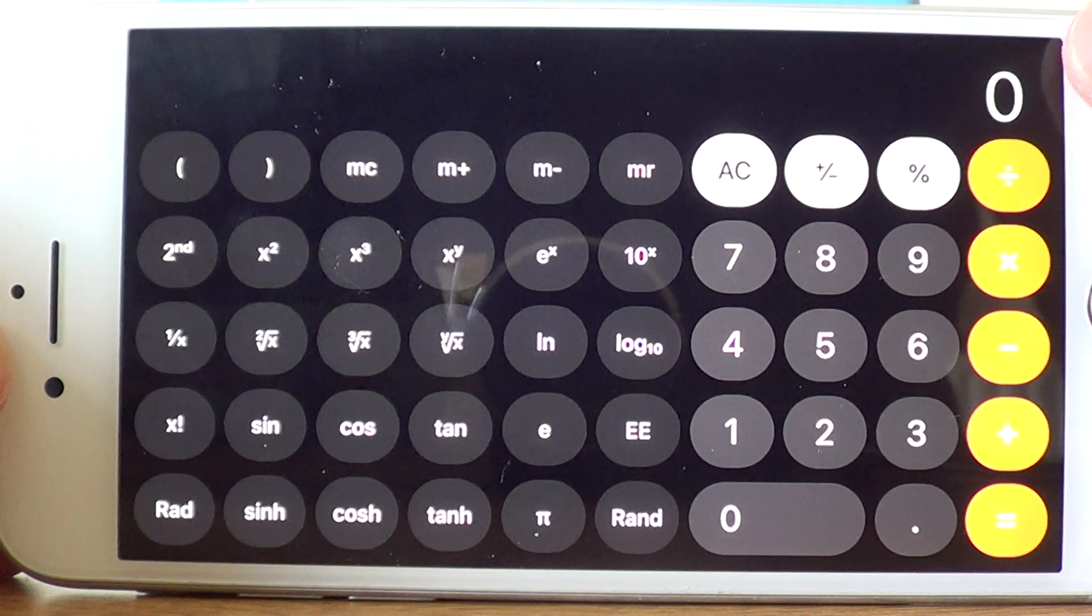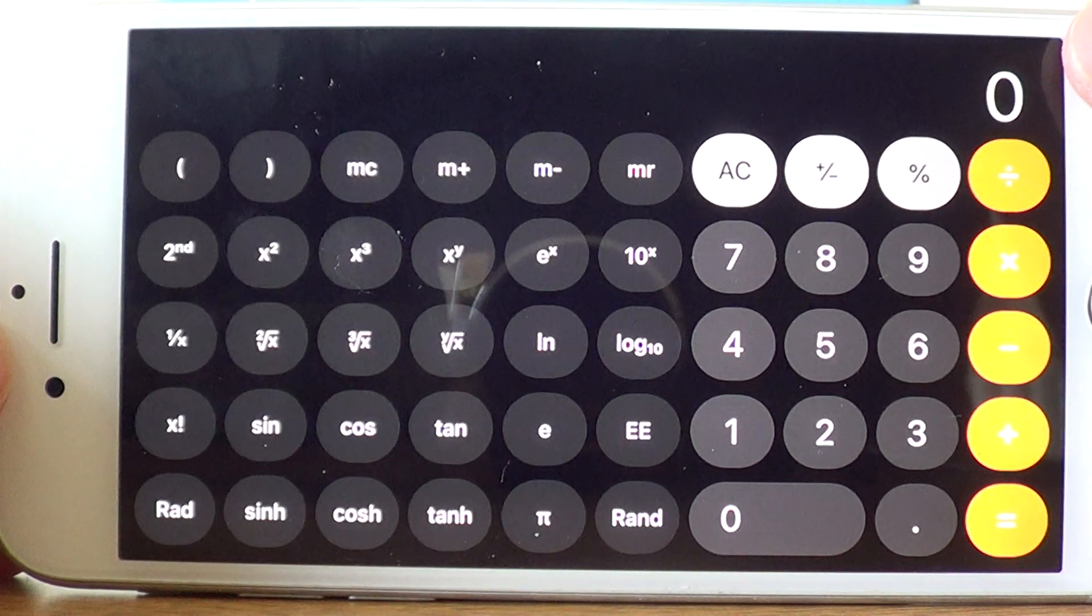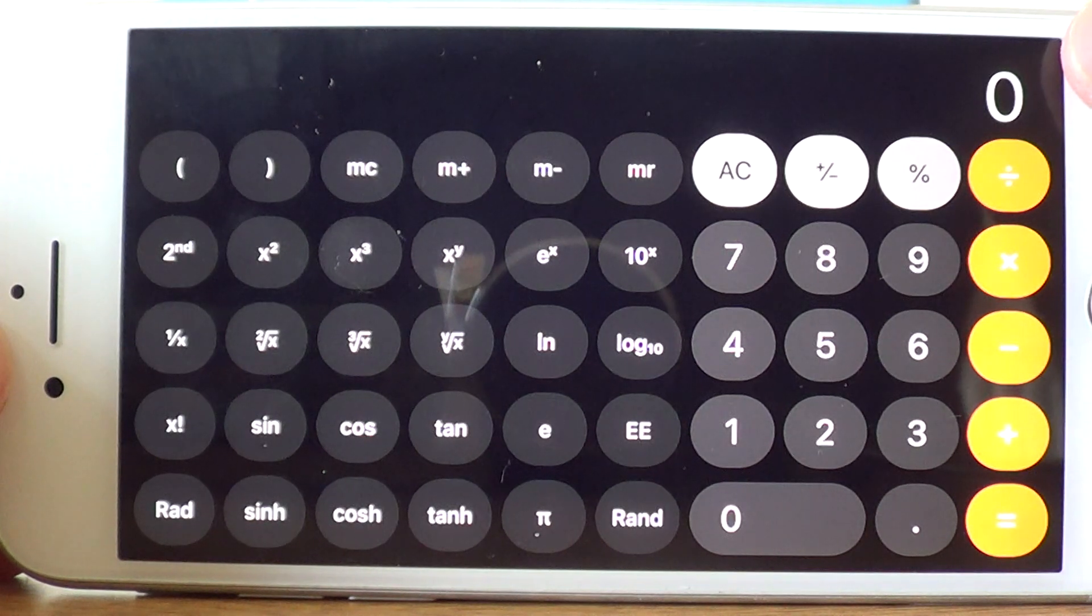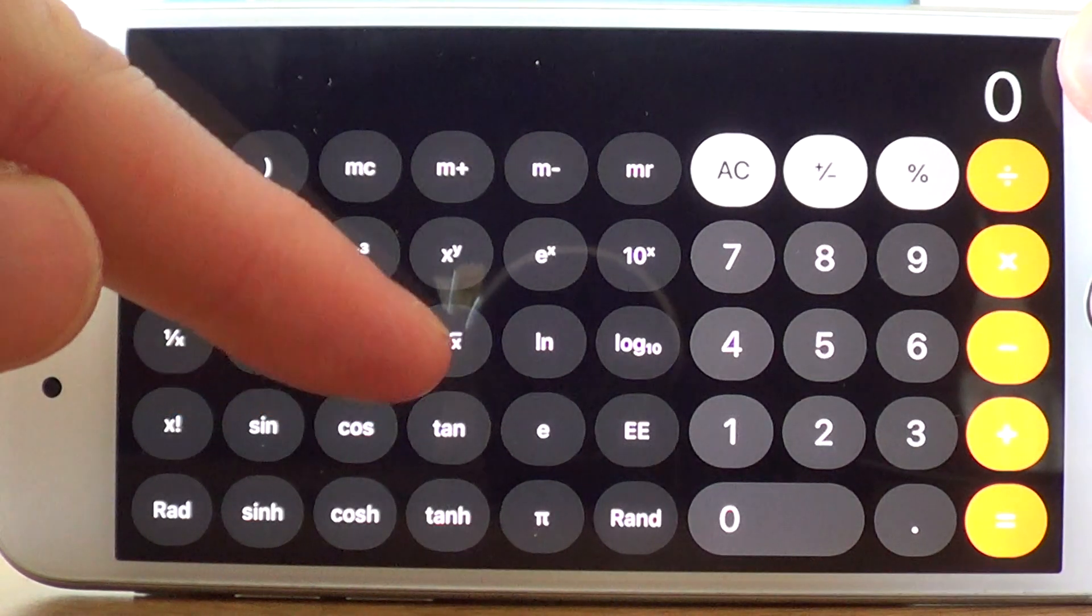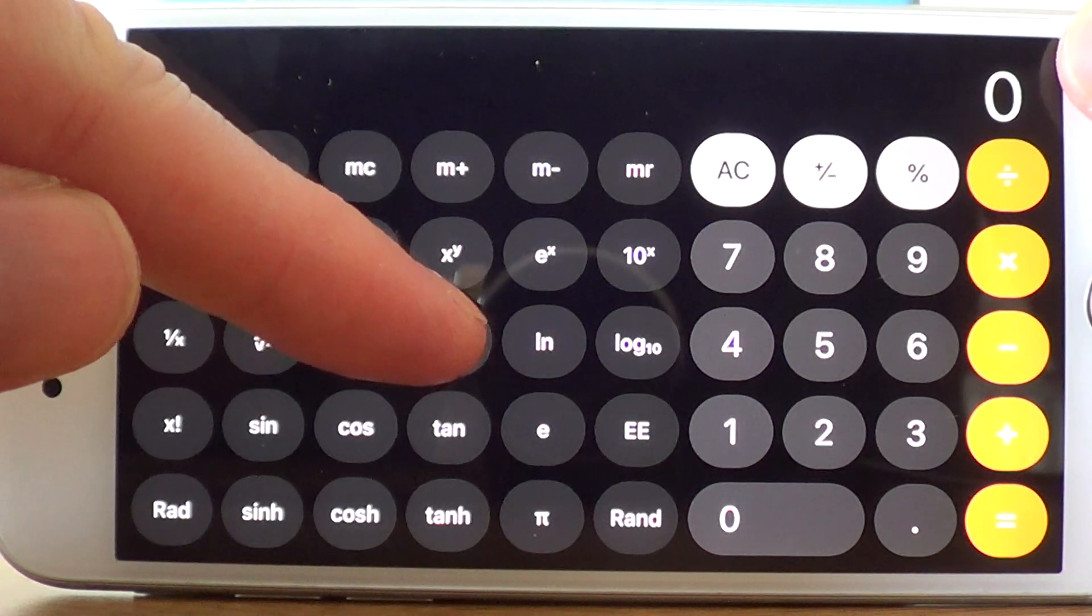Once you've opened the calculator app, turn your calculator sideways so it's in scientific mode. To work out the fourth root, we need to use this key here on the third line.